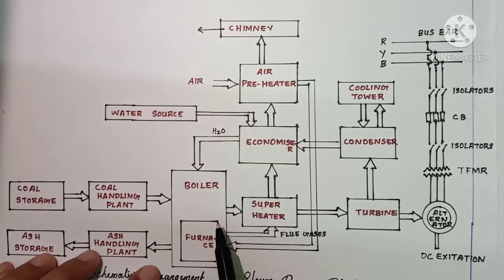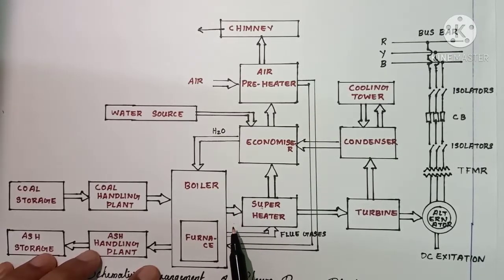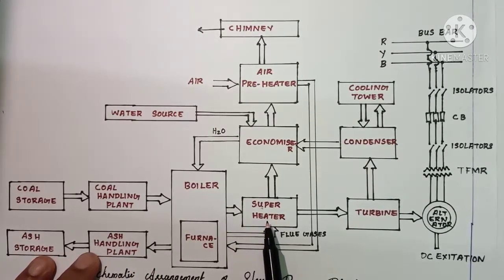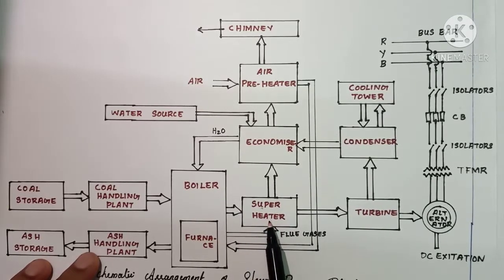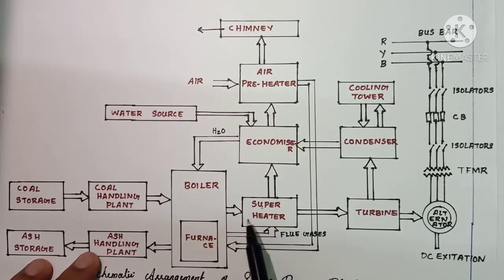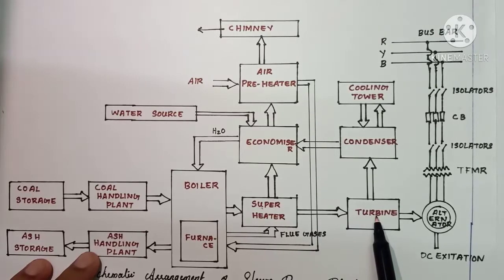The steam generated is not yet fully dry, so in order to make it dry and superheated, it is directed into the superheater. The superheater is the region where the steam gets dried and superheated. This superheated steam then enters the turbines.